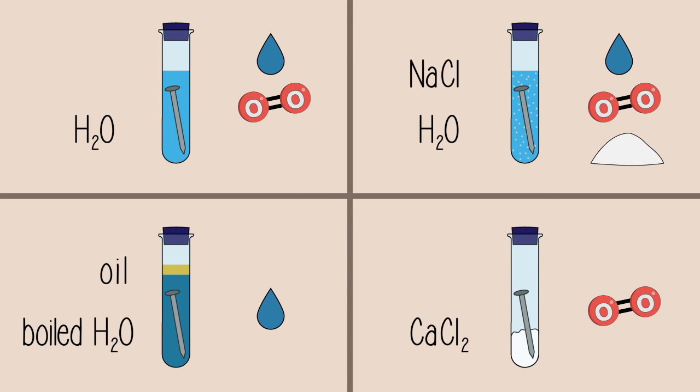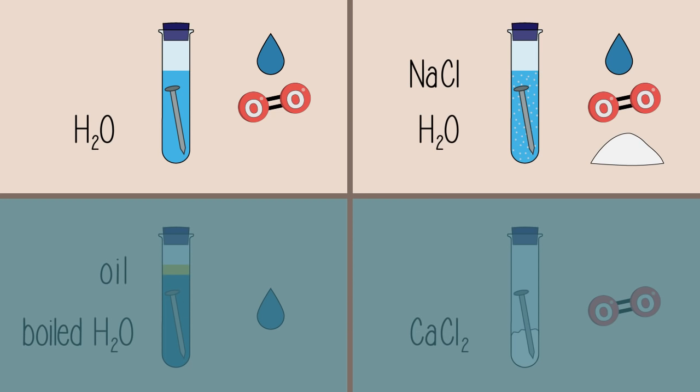Stopper all four test tubes with a rubber bung and let stand for a couple of days. You will find that the nails in the first and second test tubes have rusted. In particular,